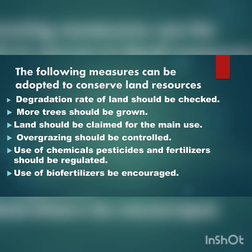The degradation rate of land should be checked. More and more trees should be grown. Land should be managed for its main use. Overgrazing should be controlled. Use of chemical pesticides and fertilizers should be regulated. Use of bio-fertilizers should be encouraged. Processing and filtering units should be set up in large industries to treat and segregate toxic, non-toxic and organic waste before dumping them into the ground or water bodies. Land should be used according to its land use capability. Fallow land and landfills should be covered with dry leaves and other organic waste.